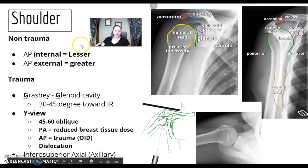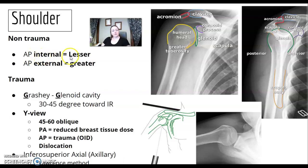Shoulder, non-trauma. What are you looking at? AP internal — you're going to see the lesser tubercle. AP external — you're going to see the greater tubercle.